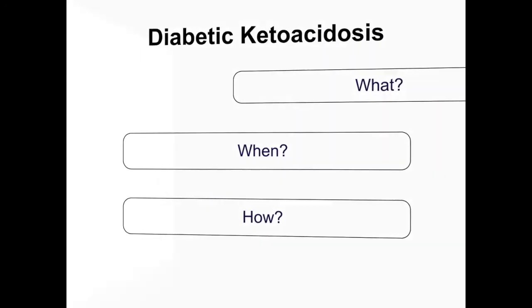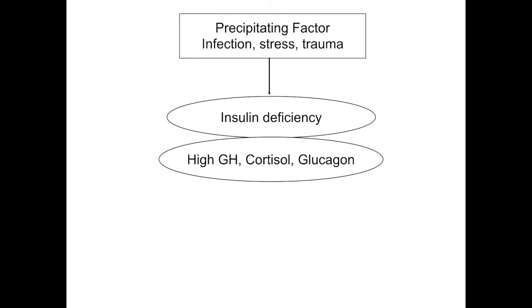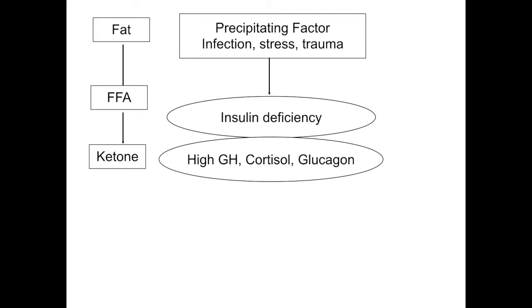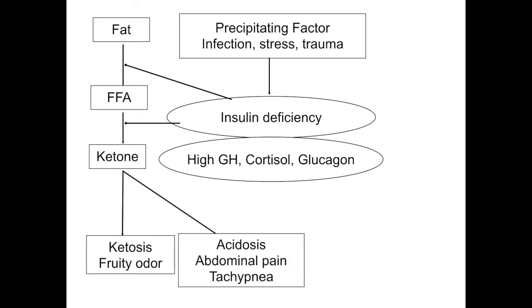The most important aspect to understand is the pathophysiology of DKA. Under most situations there is a precipitating factor — infection, stress, or trauma — which tilts the balance in a diabetic child. This results in two key pathophysiological changes: insulin deficiency and excess of counter-regulatory hormones including high growth hormone, cortisol, and glucagon. Insulin deficiency causes enhanced lipolysis, producing more fatty acids and ketones, responsible for ketosis, fruity odor, and acidosis.